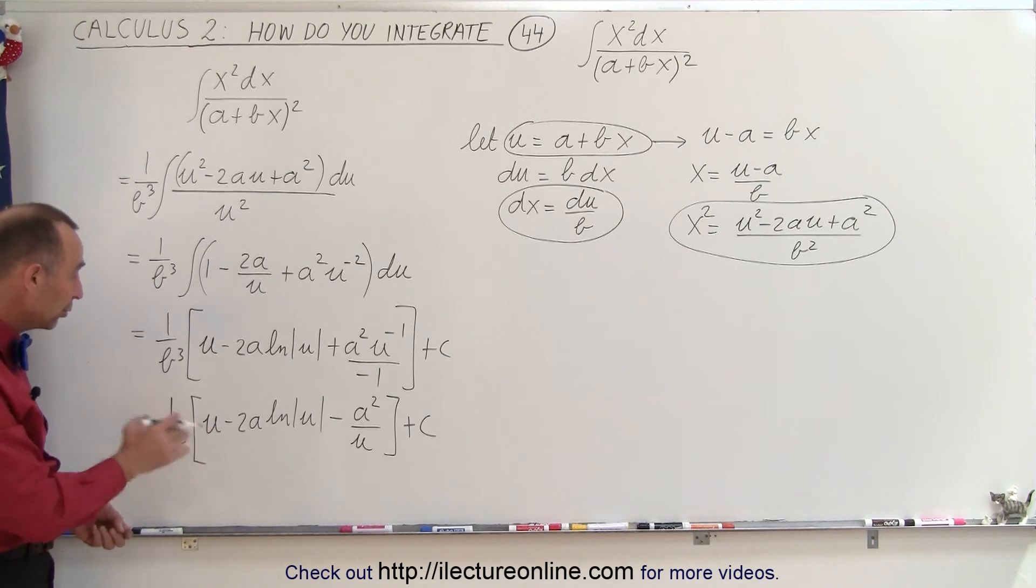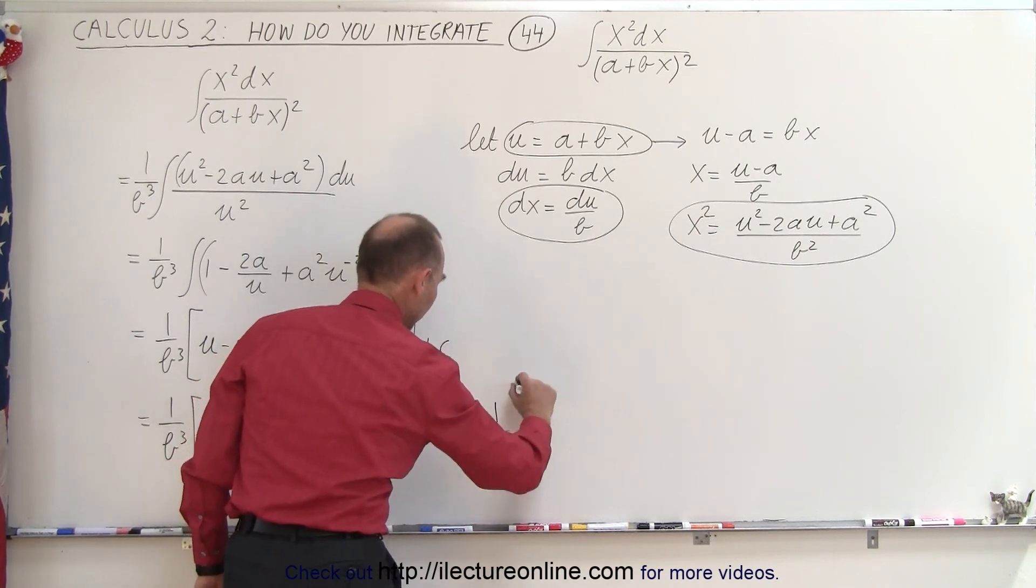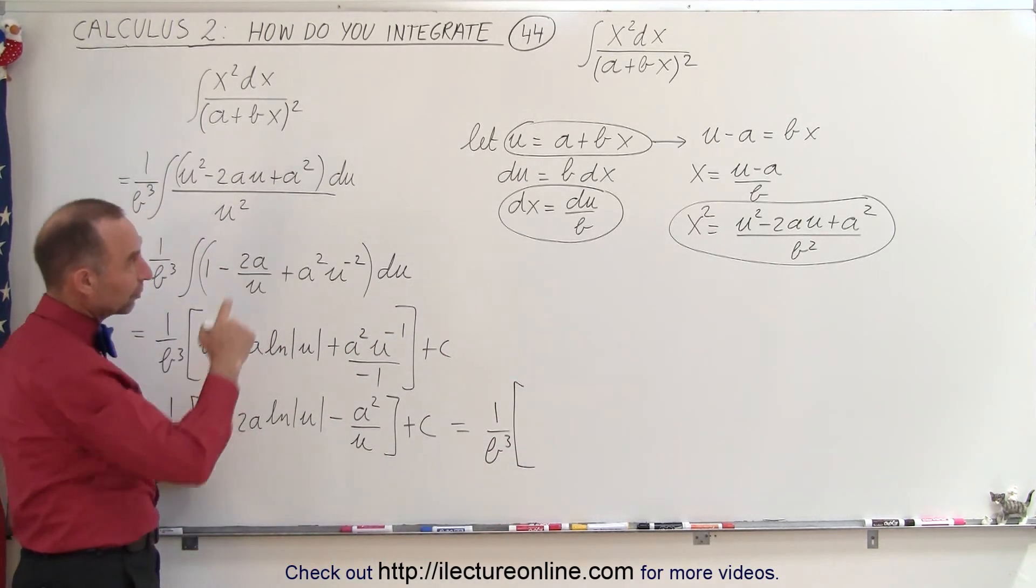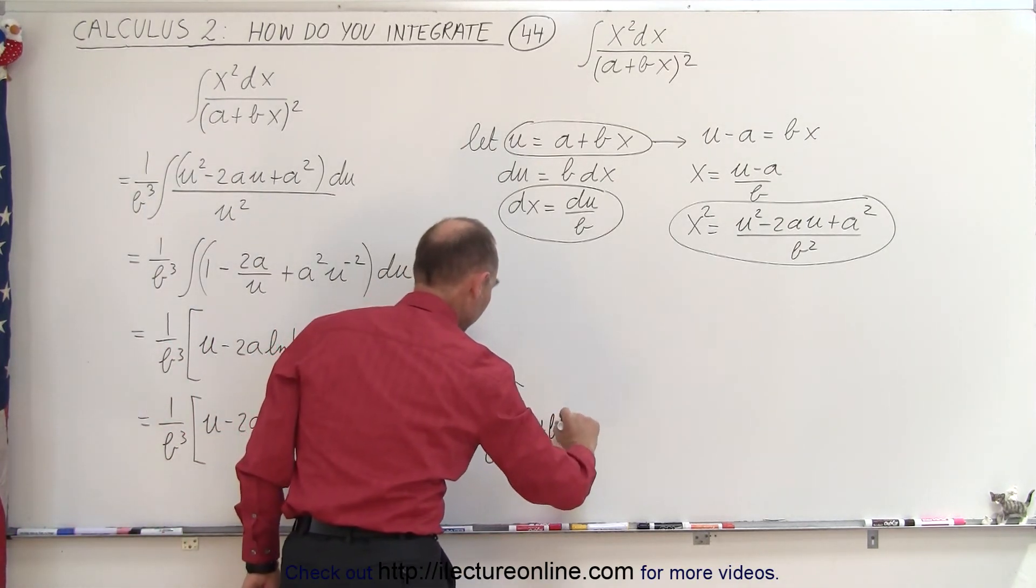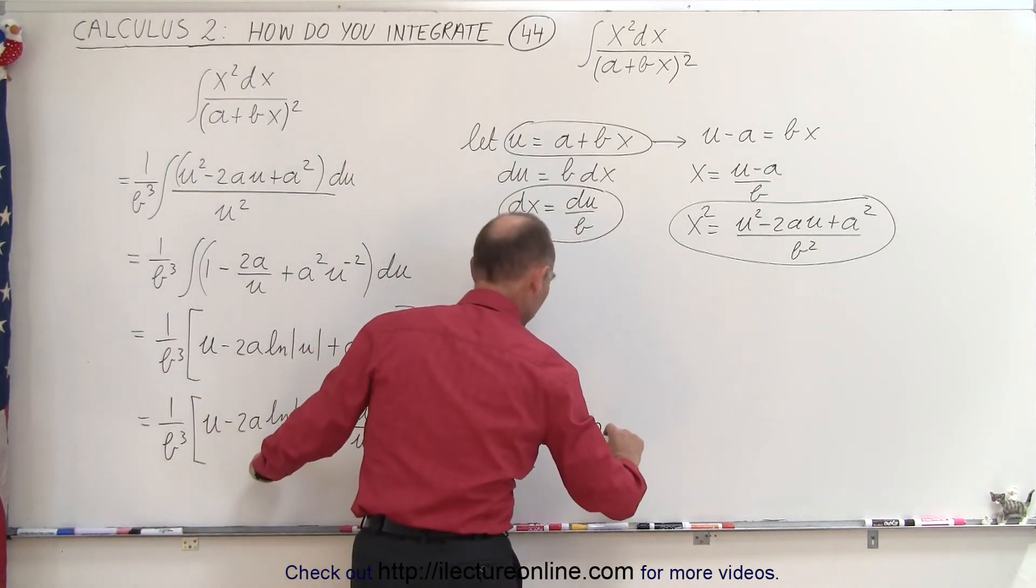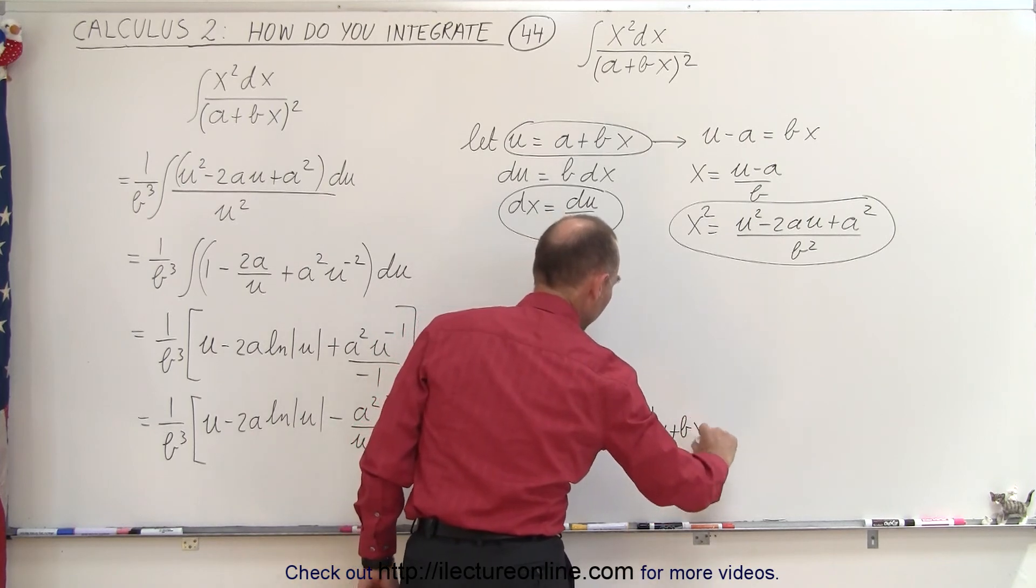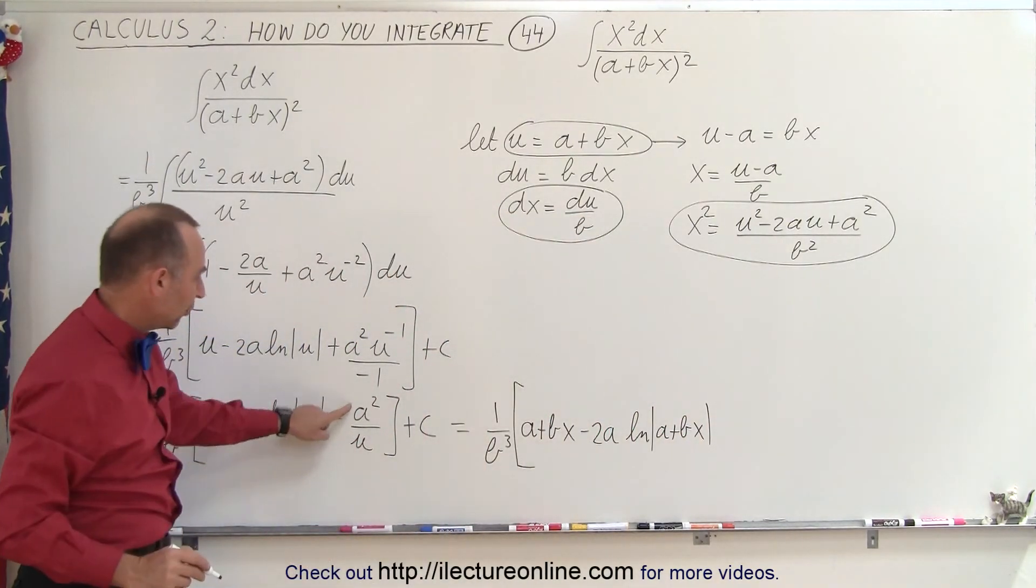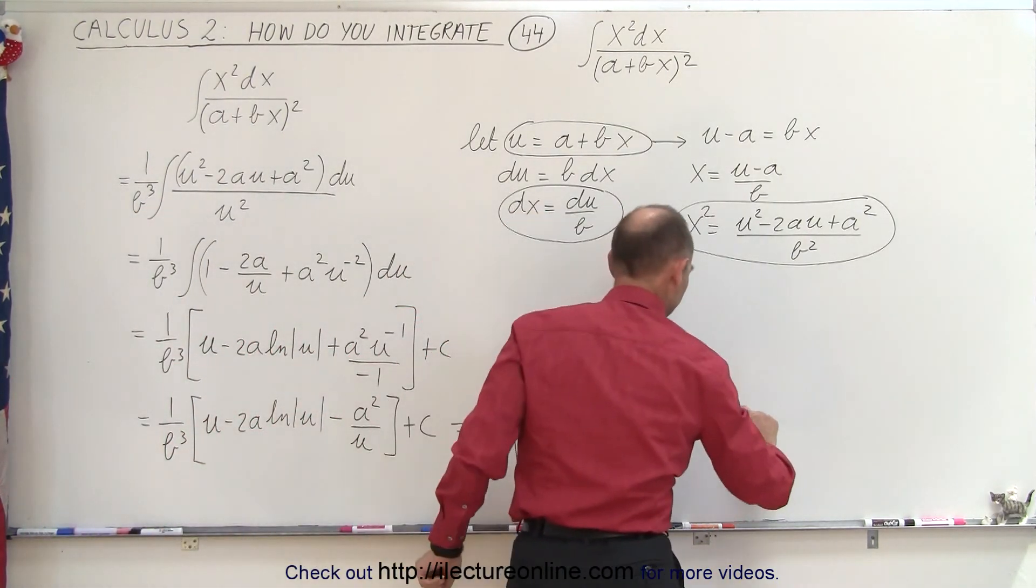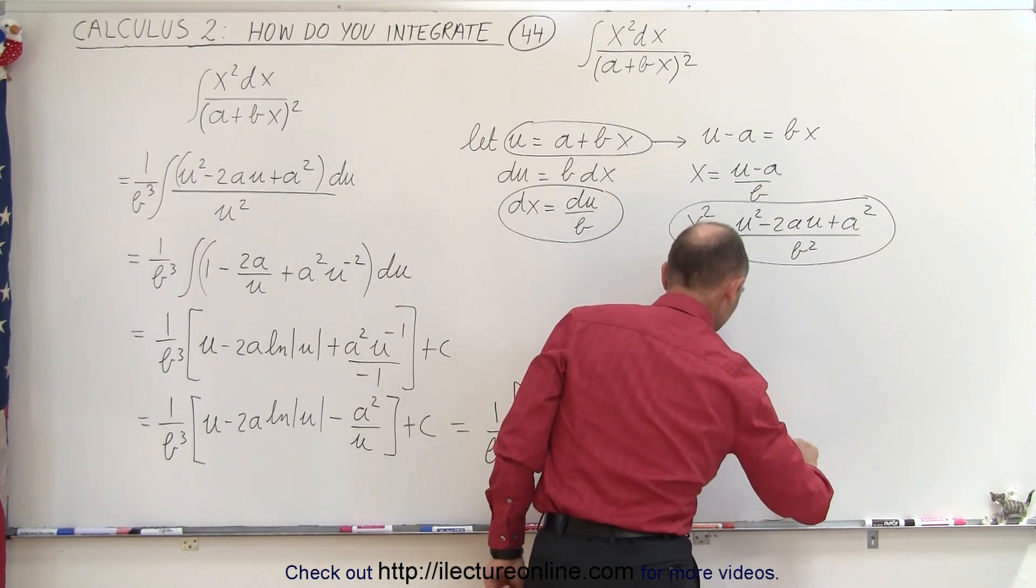And now all we have to do is replace what u is equal to, it's a plus bx, so this becomes equal to 1 over b cubed times u, which becomes a plus bx. And then we have minus 2a times the natural log of u, minus 2a times the natural log of a plus bx. And then finally minus a squared over u, and u is a plus bx, plus a constant of integration.